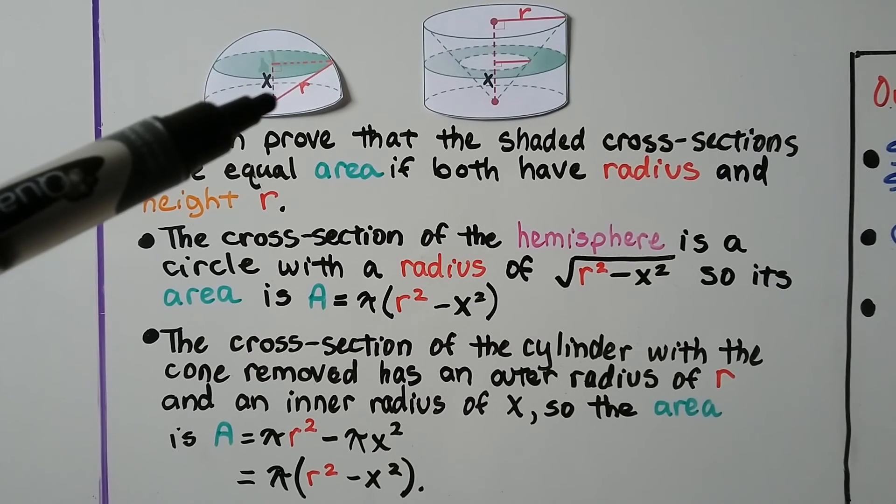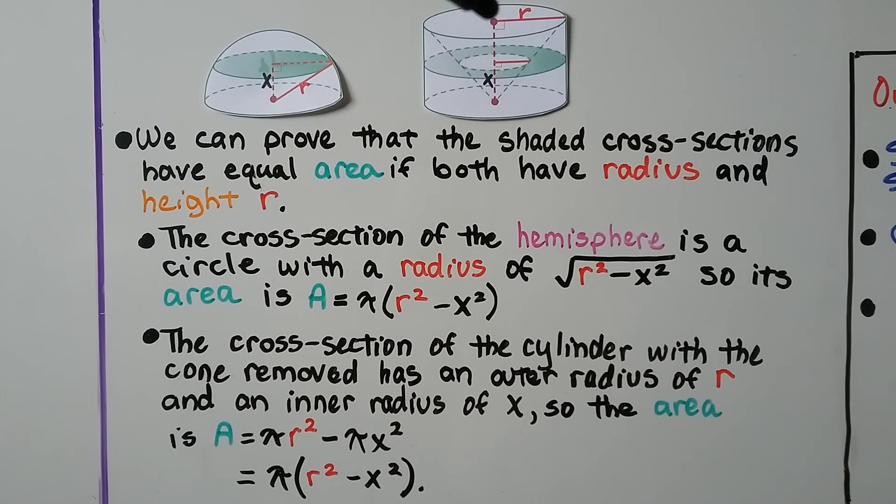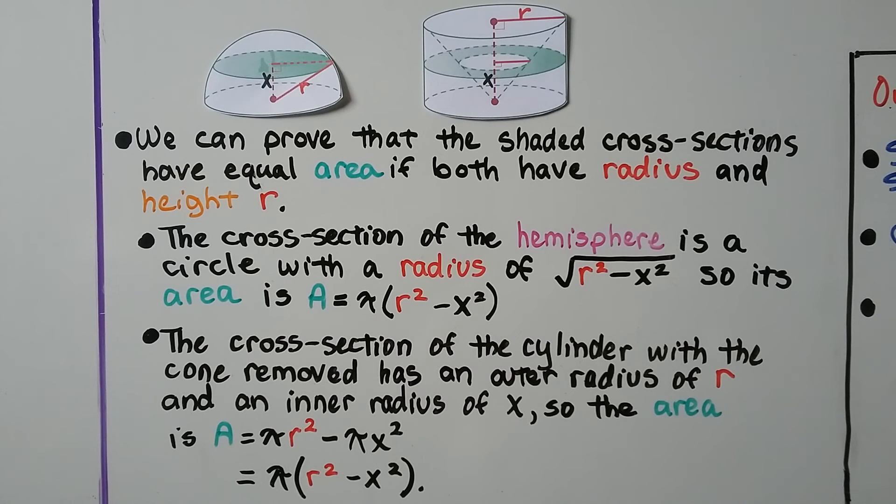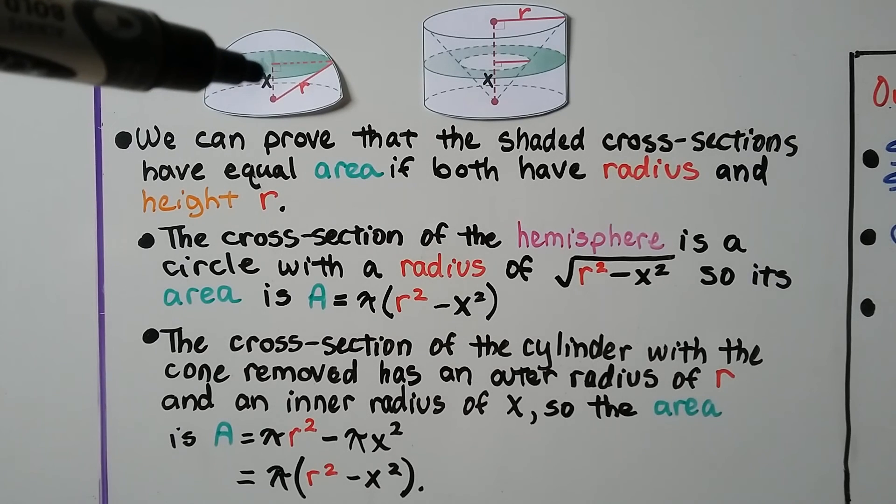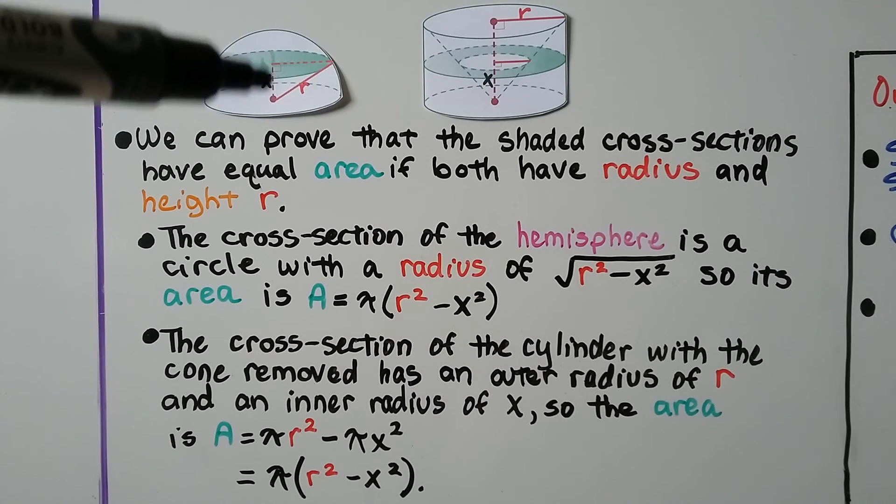We can actually prove that the shaded cross sections have equal area if both have radius and height of r. So, here we have a radius coming from the center of the circle to the here. Here we have a radius going from this center point of this base to the edge. And the cross section of the hemisphere is a circle with a radius of the square root of r squared minus x squared.